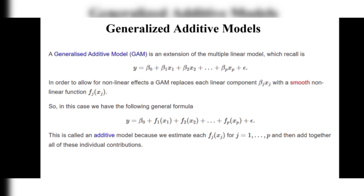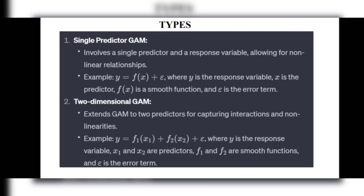In order to allow for non-linear effects, a GAM replaces each linear component βⱼxⱼ with a smooth non-linear function fⱼ(xⱼ). That means β₁x₁ and β₂x₂ are replaced with f₁(x₁) and f₂(x₂). This is called an additive model because we estimate each fⱼ(xⱼ) for j = 1 to p and then add together all of these individual contributions.